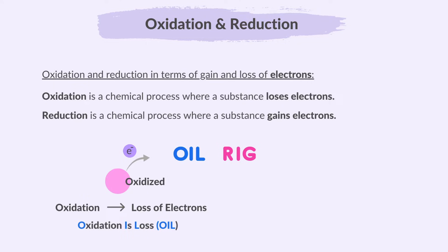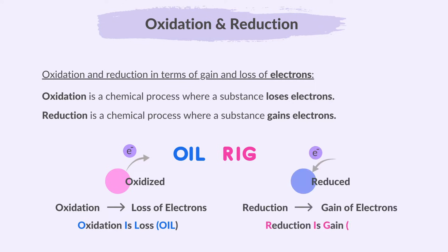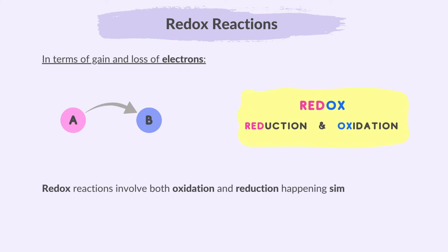Oxidation is loss — OIL — oxidation involves losing electrons. And reduction is gain — RIG — reduction involves gaining electrons. Remember, redox reactions involve both oxidation and reduction simultaneously. In terms of gain and loss of electrons, when one atom loses electrons, another atom gains electrons.